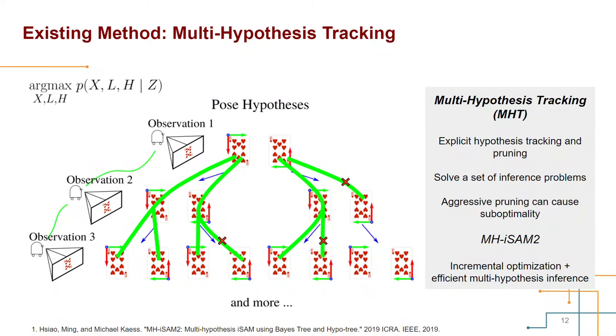Multi-hypothesis tracking is another class of method which explicitly keeps track of the hypothesis. A number of inference problems will be maintained and solved for the corresponding hypothesis. To keep the method efficient, the less probable pose hypothesis will be pruned out. If the pruning strategy is too aggressive, we may get a suboptimal solution. MH-iSAM2 is a recently implemented multi-hypothesis SLAM solver. It combines the idea of incremental optimization and efficient multi-hypothesis inference. It can maintain multiple state estimates and is general enough to solve a broad range of ambiguity problems.